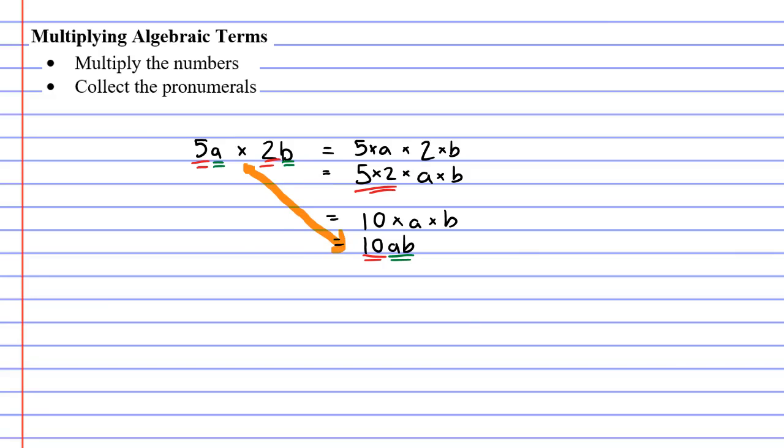Let's do one more example and this time we'll make it a little bit trickier. We'll take 6ab and multiply this by 2b. So if you write down all the hidden multiplication, 6ab is 6 times a times b and 2b is 2 times b.